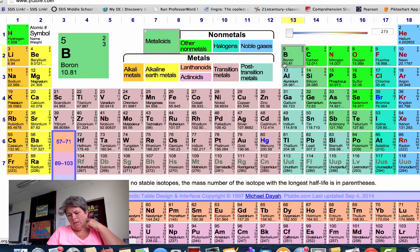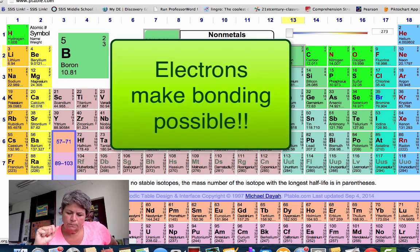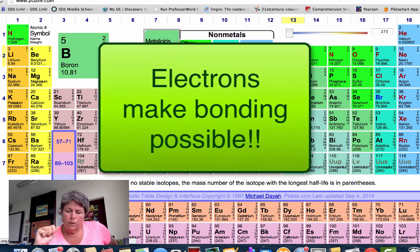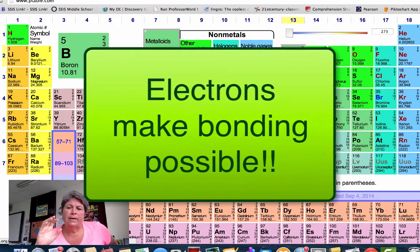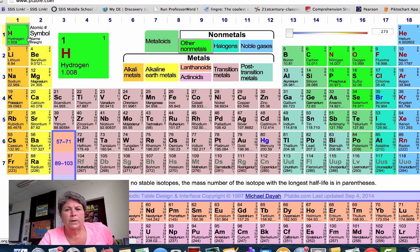So we have to talk about electrons, because electrons are the subatomic particle that makes bonding possible. Now, not all electrons either. If you remember when we were talking about electrons and the periodic table before, we talked about valence electrons. I'm going to use this periodic table that I have on the screen here.